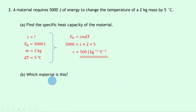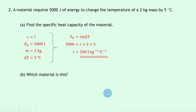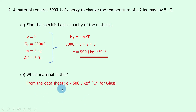Part b then says which material is this? You would look at your data sheet for the material with a specific heat capacity of 500 J/kg/°C. From the data sheet, that value corresponds to glass, so the material is glass.